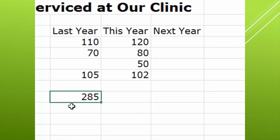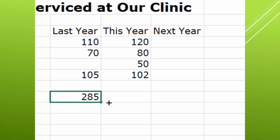So now I'm in B9, and if I look up in the function bar, I can see the formula. Here's the value that's returned: 285. I want to take this formula and have it right here for this year. The easiest way to do that is just use the autofill icon and drag it right over. I certainly could have just gone to auto sum and added it up again.